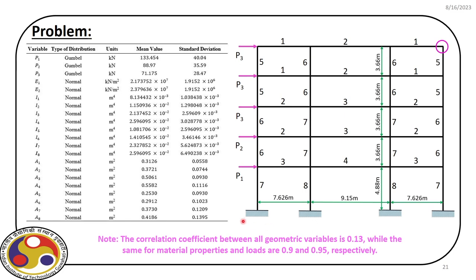We have a set of random variables which are correlated and non-normal, corresponding to the most general case we have already discussed. In the earlier problems we solved, the limit state was in explicit closed-form expressions, and once we identified the limit state we could easily differentiate with respect to the random variables in Z-space. In first order reliability analysis we need to evaluate the gradient in every iteration, and based on that gradient we evaluate the next design point.